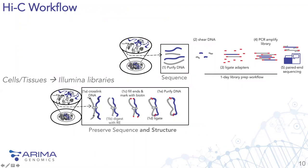In Hi-C, you begin with cells and the first step is to cross-link them, which freezes the genome organization in time — like taking a snapshot. That cross-linked DNA is then digested with a restriction enzyme. The ends are filled in with a biotinylated nucleotide and then ligated together. Gray and blue DNA sequences become ligated into one piece, even though they were only previously held together by protein — creating an artificial fragment where the ligation junction captures that unique spatial proximity information.